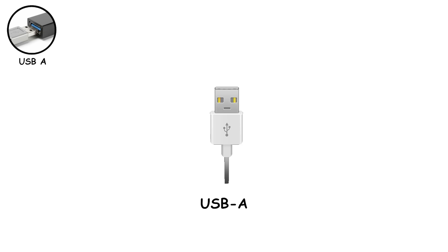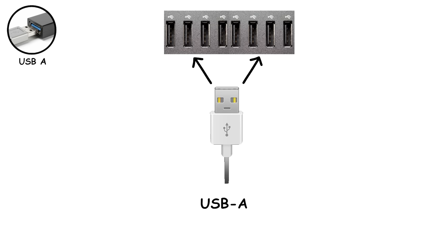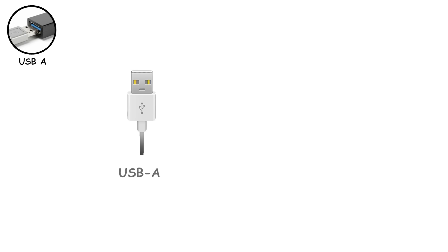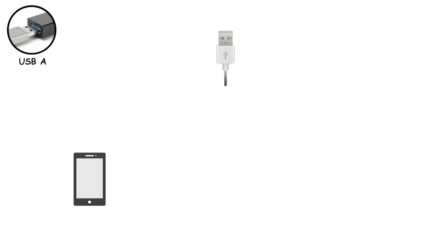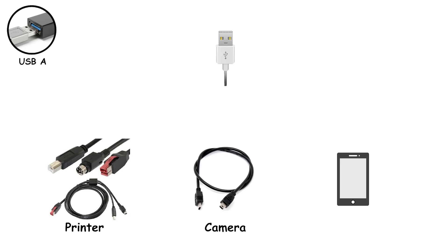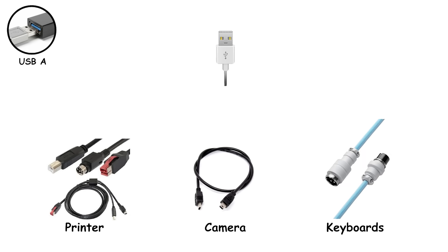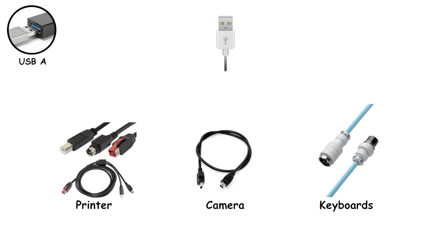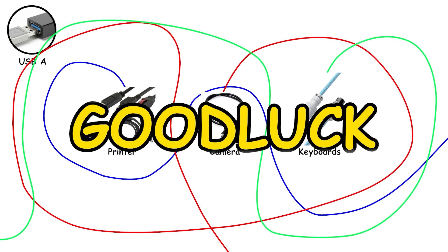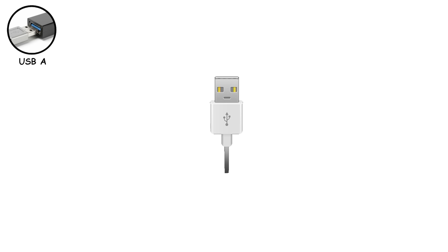USB-A is the classic rectangular port that solved one of tech's messiest problems: the cable nightmare of the 90s. Back before USB became standard, every device had its own unique connector. Printers had one shape, cameras had another, keyboards had something completely different. It created a giant mess of incompatible cables, and if you lost one, good luck finding a replacement that actually fit. USB-A helped clean all that up by becoming the main connector for everyday devices.